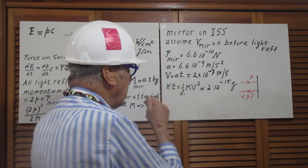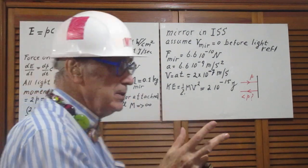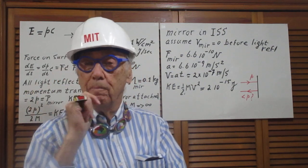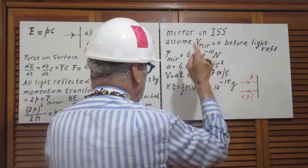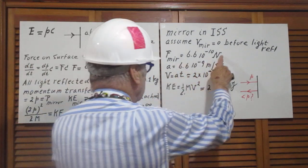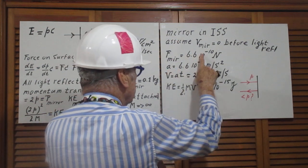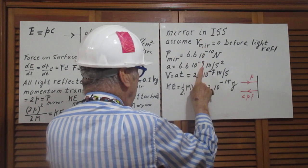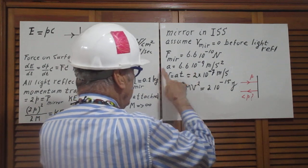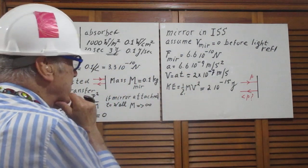Now the force on the mirror is twice this force because the momentum of the mirror is now two times little P. So the force is 6.6 times 10 to the minus 10 newtons. F equals ma, so the acceleration of the mirror is the force divided by the mass, and the mass of the mirror was 0.1 kilograms. So the acceleration is then about 6.6 times 10 to the minus 9 meters per second squared.